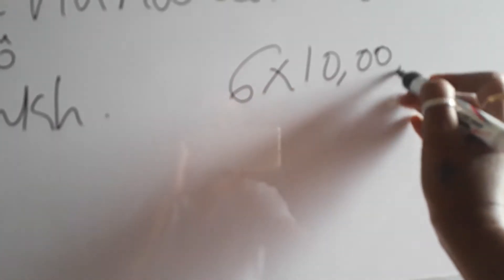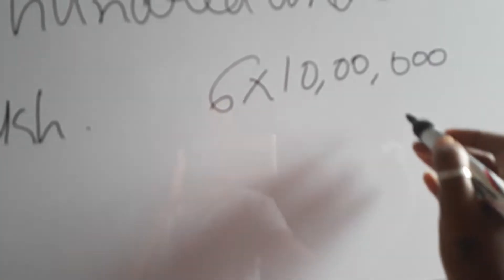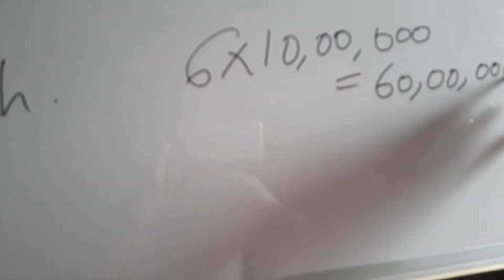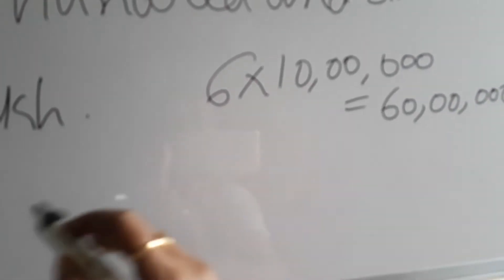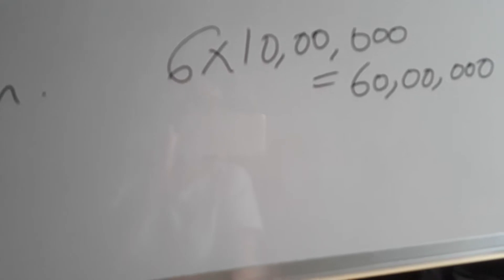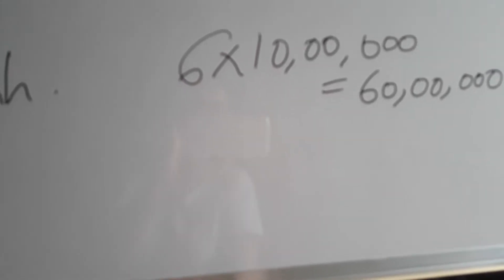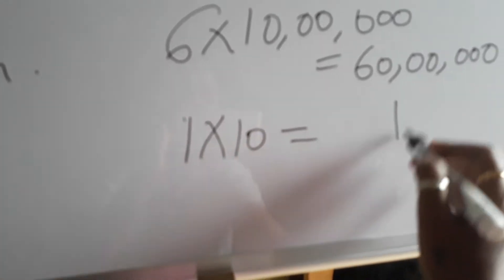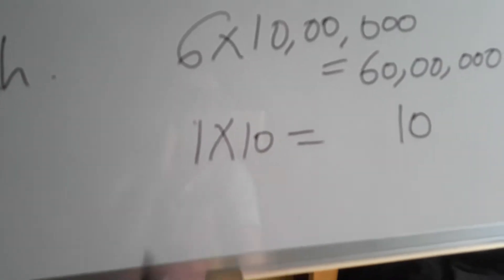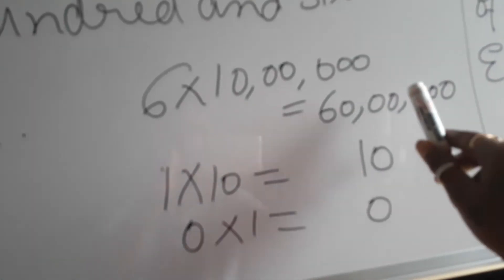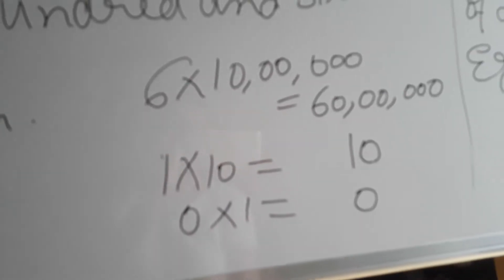I think this I'll work out for you. Look children. Six into ten lakh, that will give 60 lakh. Then all zeros. Zero into lakh, zero. Zero into ten thousand, zero. Zero into hundred, zero. One is in tens place, so one into ten will give me ten.